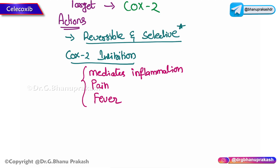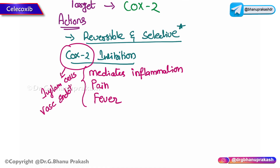Remember that COX-2 is mainly prevalent in the inflammatory cells and in the vascular endothelium. This is what you need to remember — prevalent in the inflammatory cells as well as in the vascular endothelium.